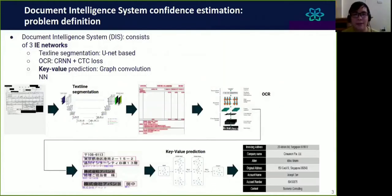Let's move on to the problem definition of confidence estimation for document intelligence system. Document Intelligence System, DIS, consists of three information extraction networks. The first one is text line segmentation that takes the input image and segments the location of text lines in the image. The second one is optical character recognition or OCR model. It uses CNN and CTC loss function to transform the image into text.